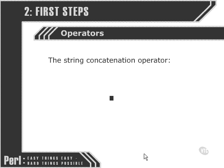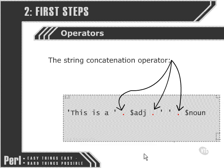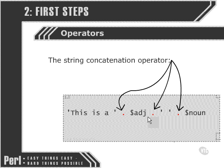Another operator to be aware of is the string concatenation operator, which is the full stop. What it does is run two strings together. We can also use it to run a literal string, a variable, or whatever we like. In this case we're actually running four things together: a literal string that says 'this is a', then a variable, then just a space, and then another variable. Of course we could have done all that without the string concatenation operator using double quotes, but this shows what it can do.